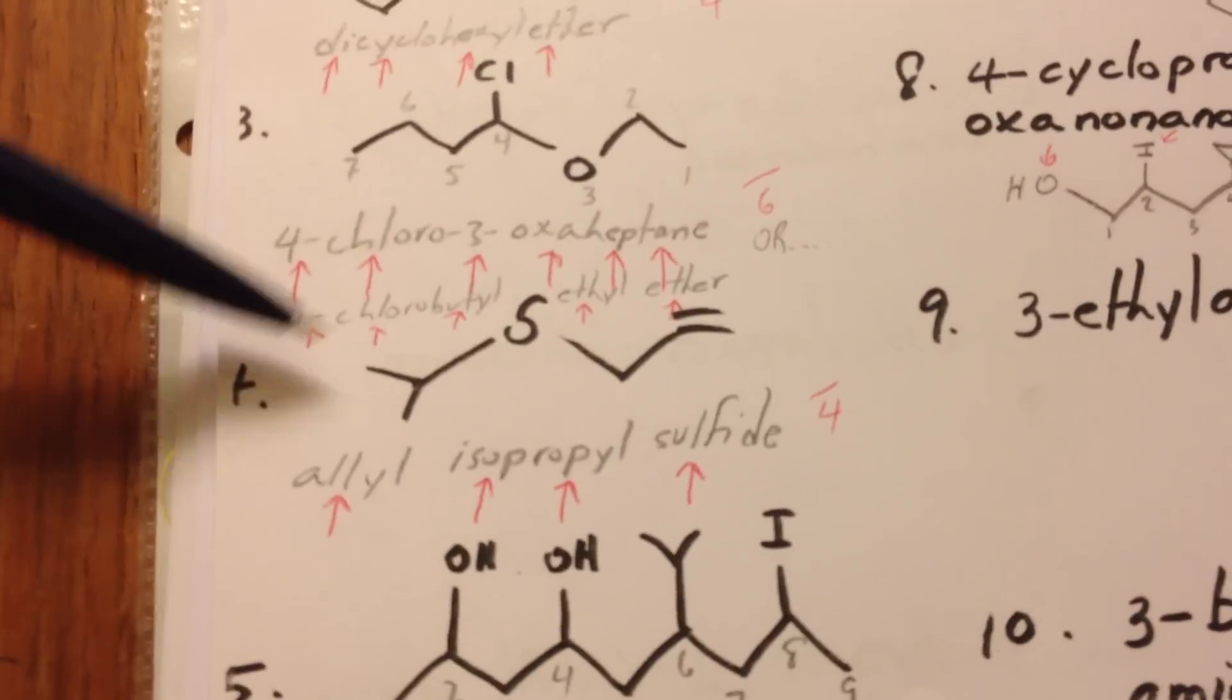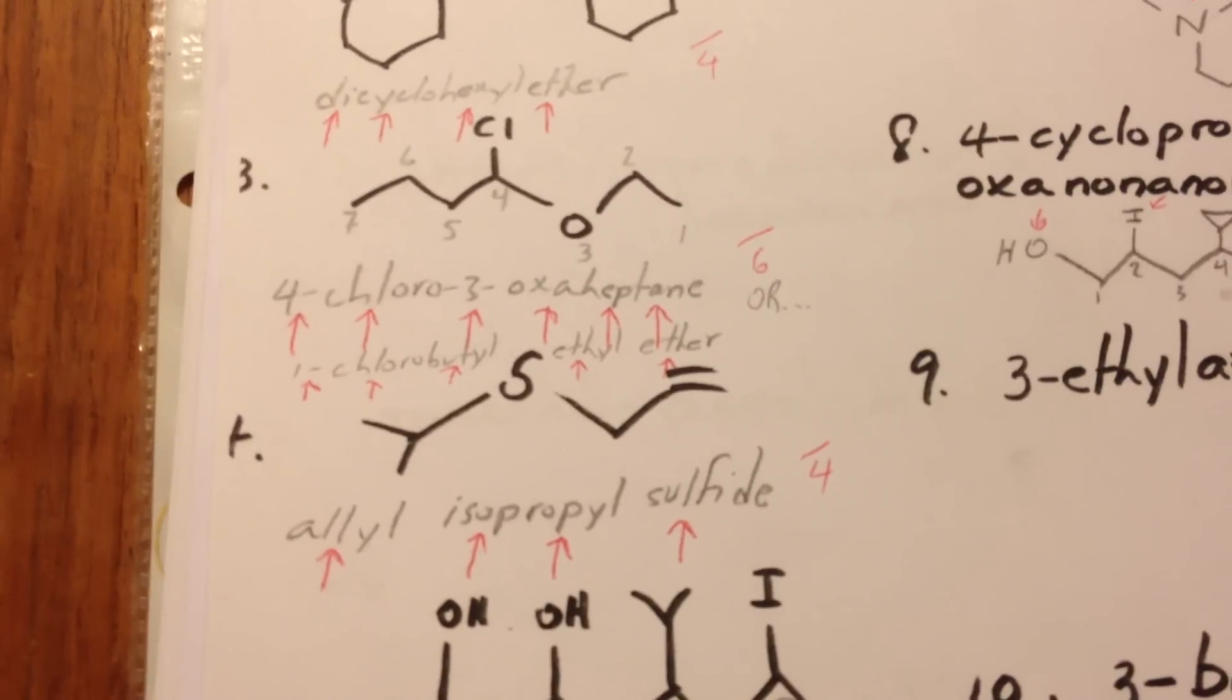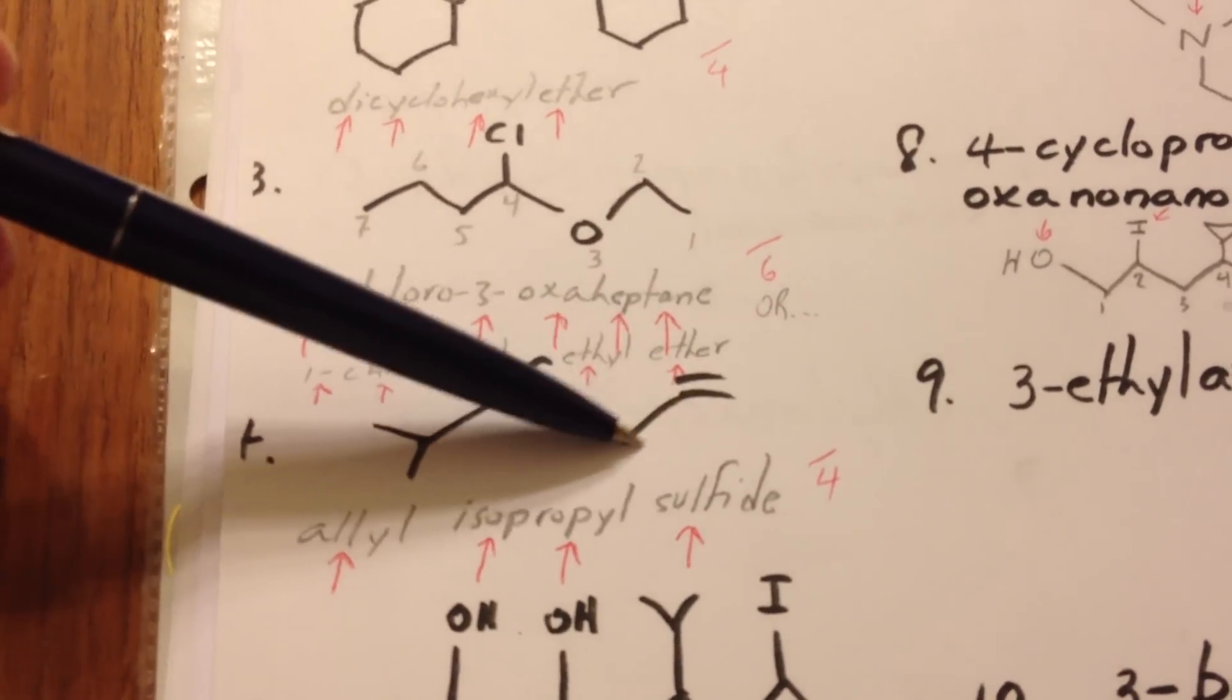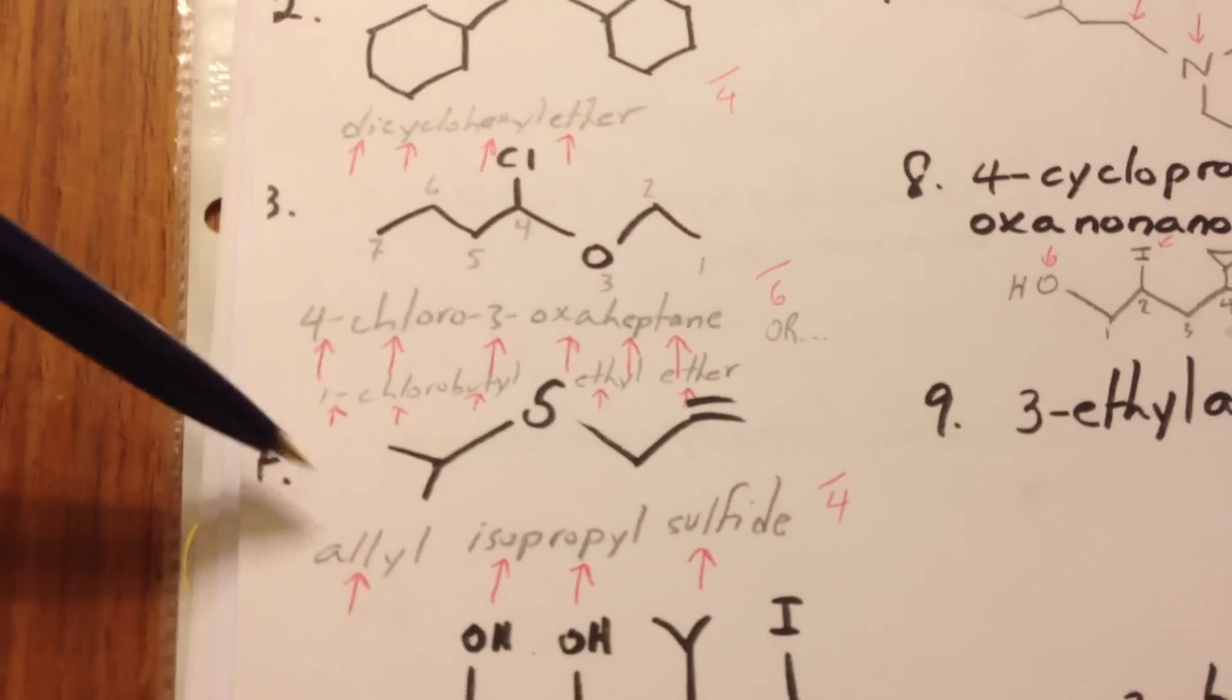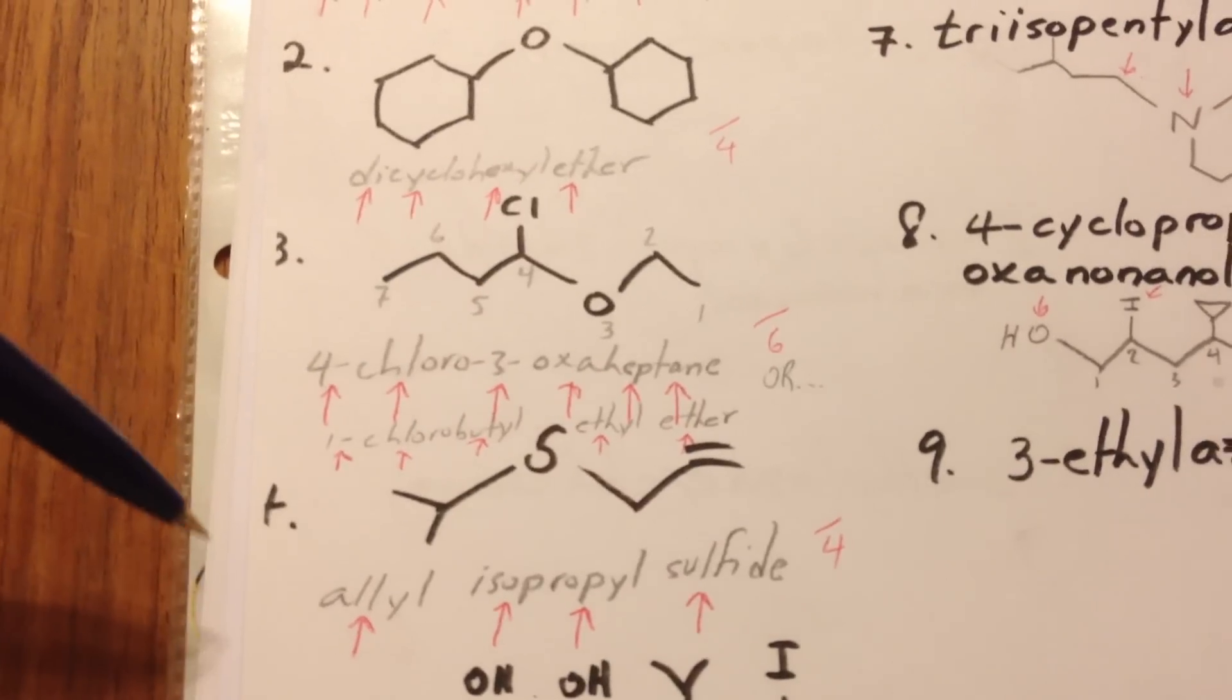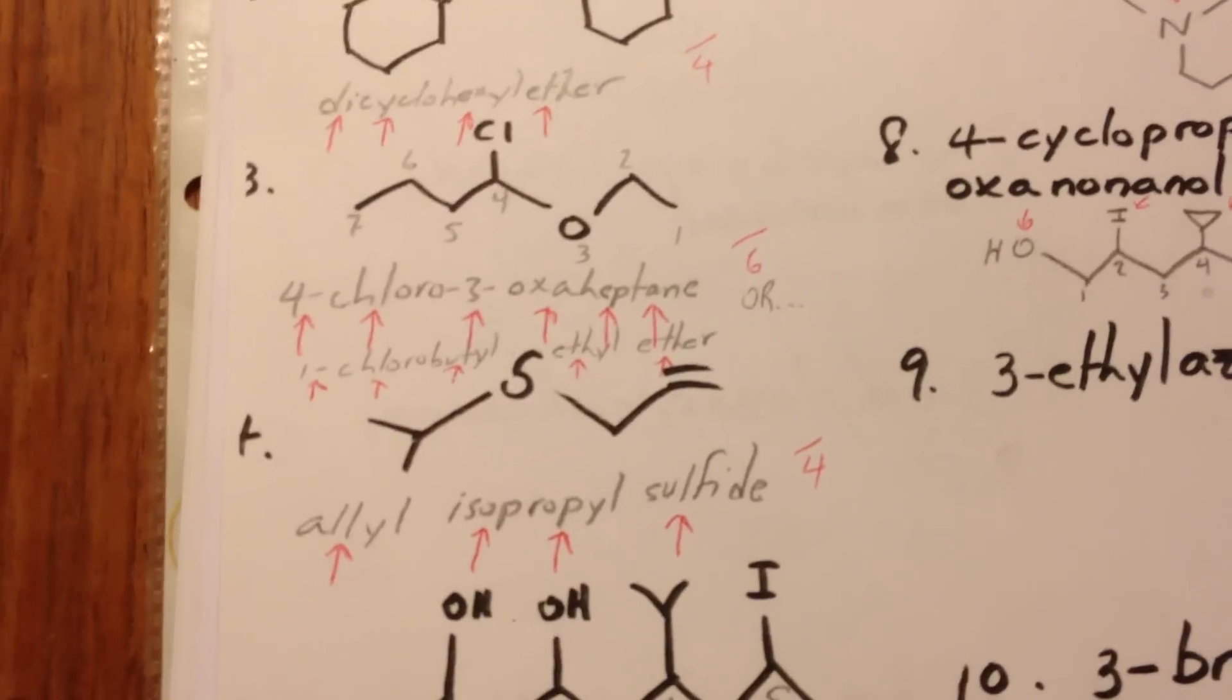Number 4, we have a sulfide. So it's the sulfur analog of an ether. There's an allyl group on one side. So allyl looks like a vinyl except with an extra elbow. And then there's an isopropyl on the other side. So we call it allyl isopropyl sulfide. That was worth 4 marks.